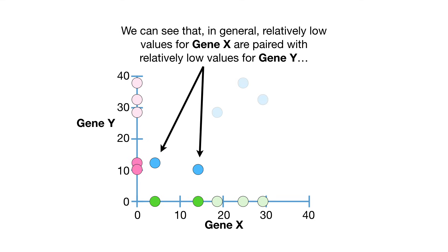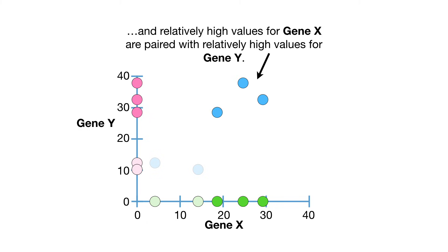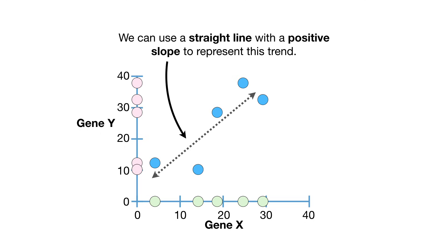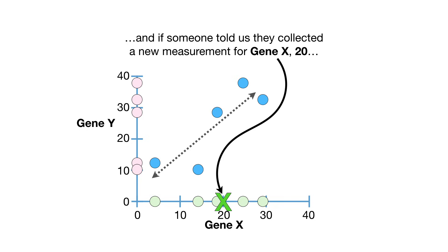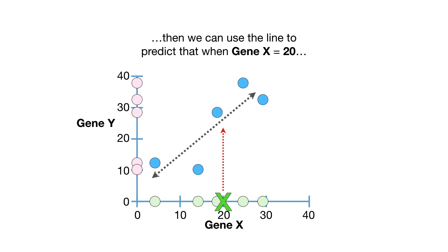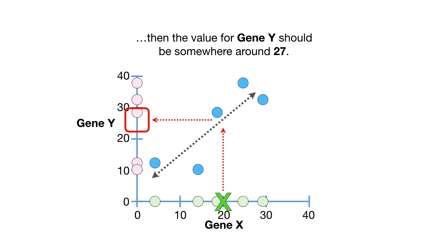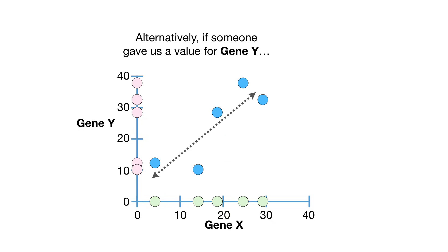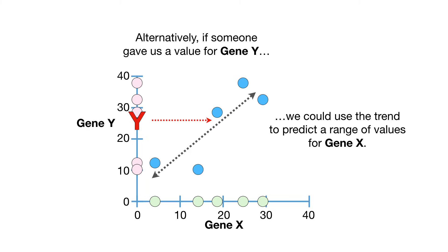We can see that, in general, relatively low values for gene X are paired with relatively low values for gene Y, and relatively high values for gene X are paired with relatively high values for gene Y. We can use a straight line with a positive slope to represent this trend. And if someone told us they collected a new measurement for gene X — 20 — then we can use the line to predict that when gene X equals 20, the value for gene Y should be somewhere around 27. Alternatively, if someone gave us a value for gene Y, we could use the trend to predict a range of values for gene X.